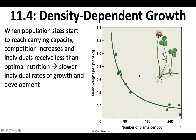This clover experiment would actually be an example of scramble competition between the individual clover plants in the pot — for the most part, everyone is receiving an equal but non-optimal amount of nutrients.